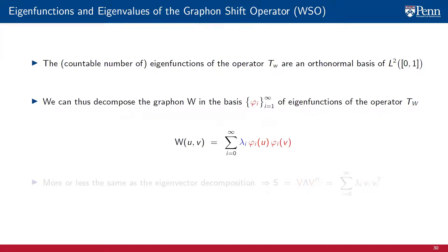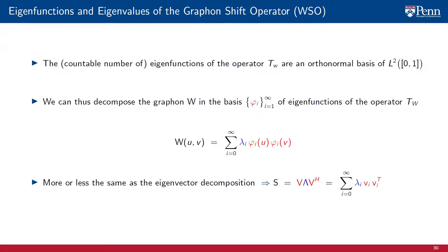It is important to observe that since the kernel of a self-adjoint Hilbert-Schmidt operator can be decomposed in the operator basis, we can thus decompose the graphon W in the basis of eigenfunctions of the operator TW. In particular, we can rewrite W as a sum over the product of an eigenvalue lambda_i and the associated eigenfunction phi_i. That is similar to the eigenvector decomposition of a graph shift operator S, which can be decomposed as the product between a matrix V made up by the eigenvectors of S and a diagonal matrix lambda containing the eigenvalues of the graph shift operator.